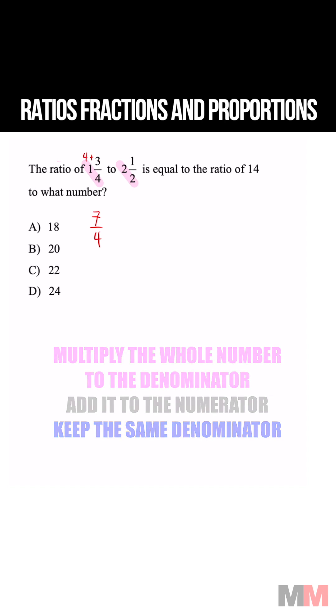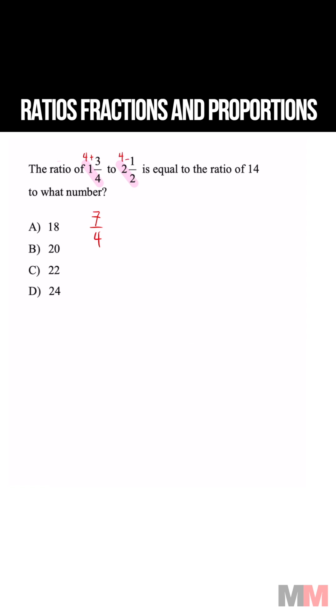Doing that again, 2 times 2 is 4, add it to 1. That's going to convert that to 5 halves.